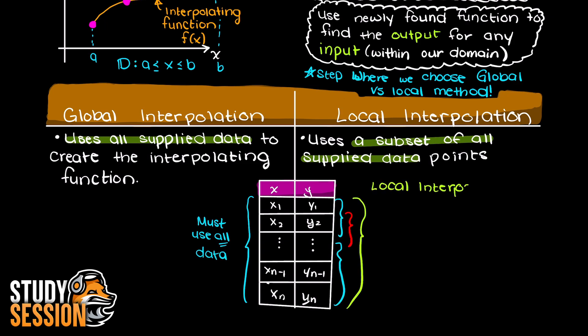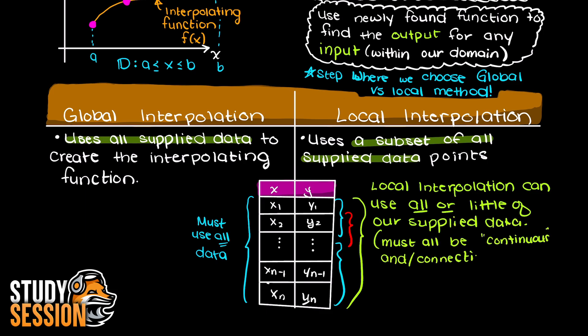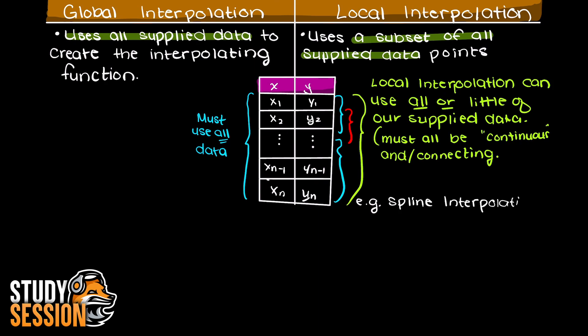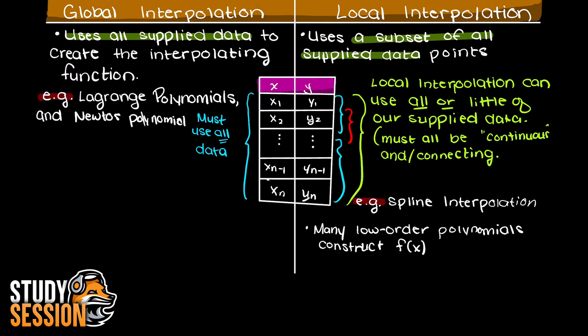So, if you can imagine this table here with all of our possible data points contained within it, this is the only data we can use when creating a global interpolating polynomial. Meaning no matter what method we use, be that Lagrange interpolation, Newton's divided difference or something else, we are going to get the exact same global interpolating polynomial.